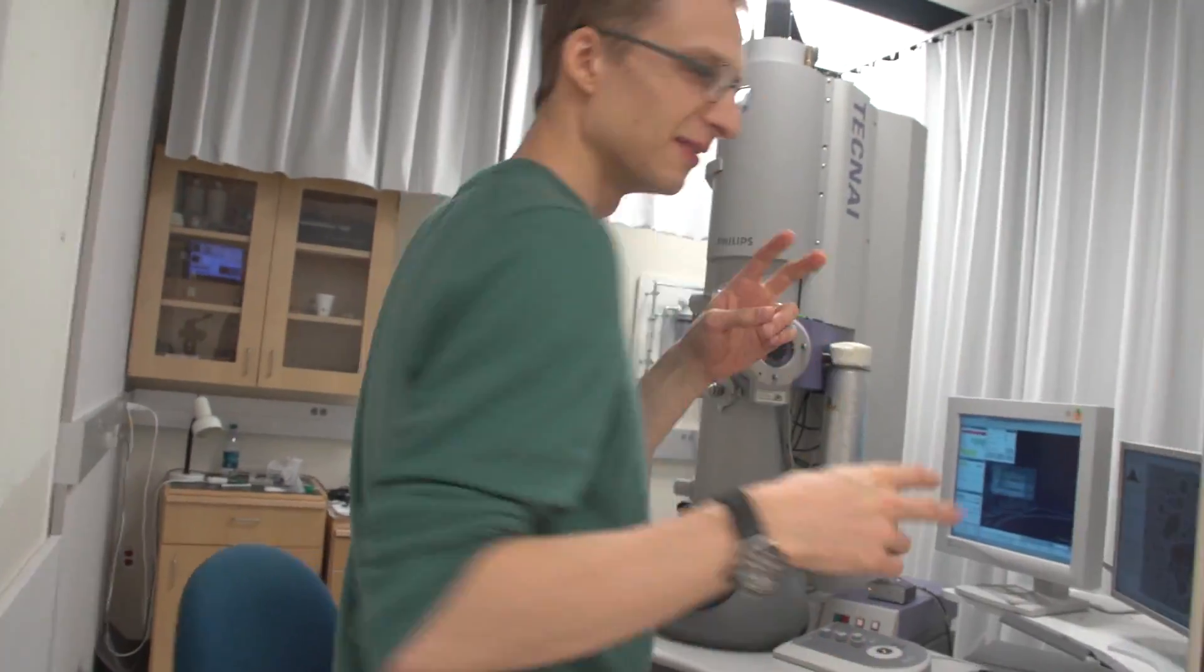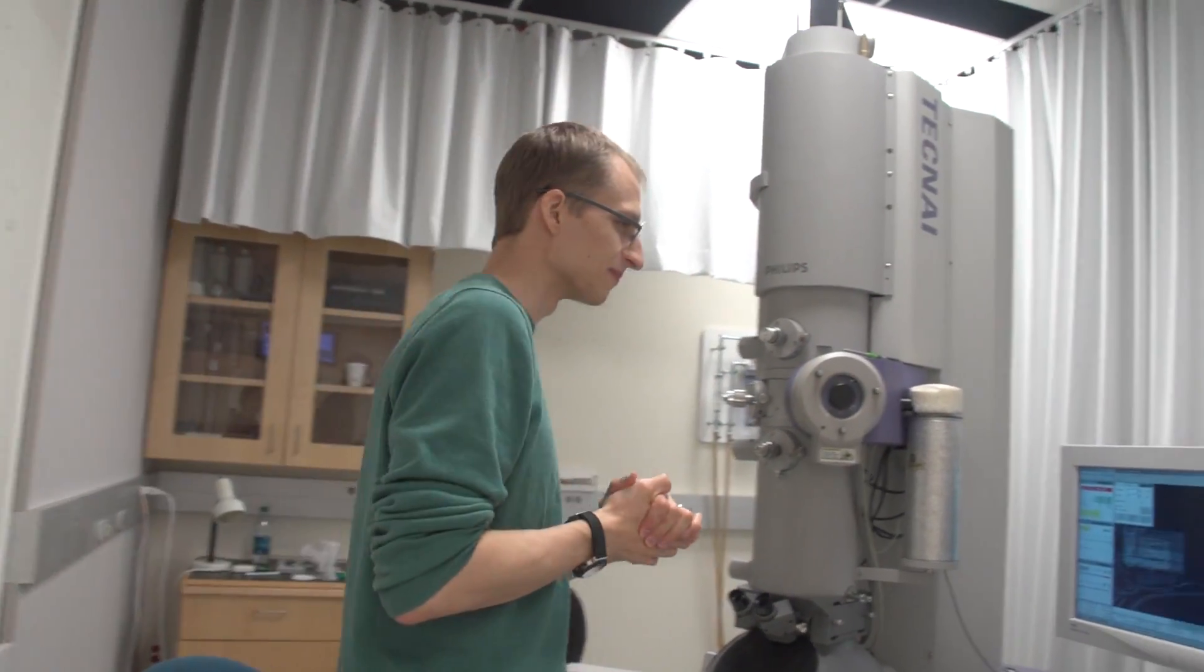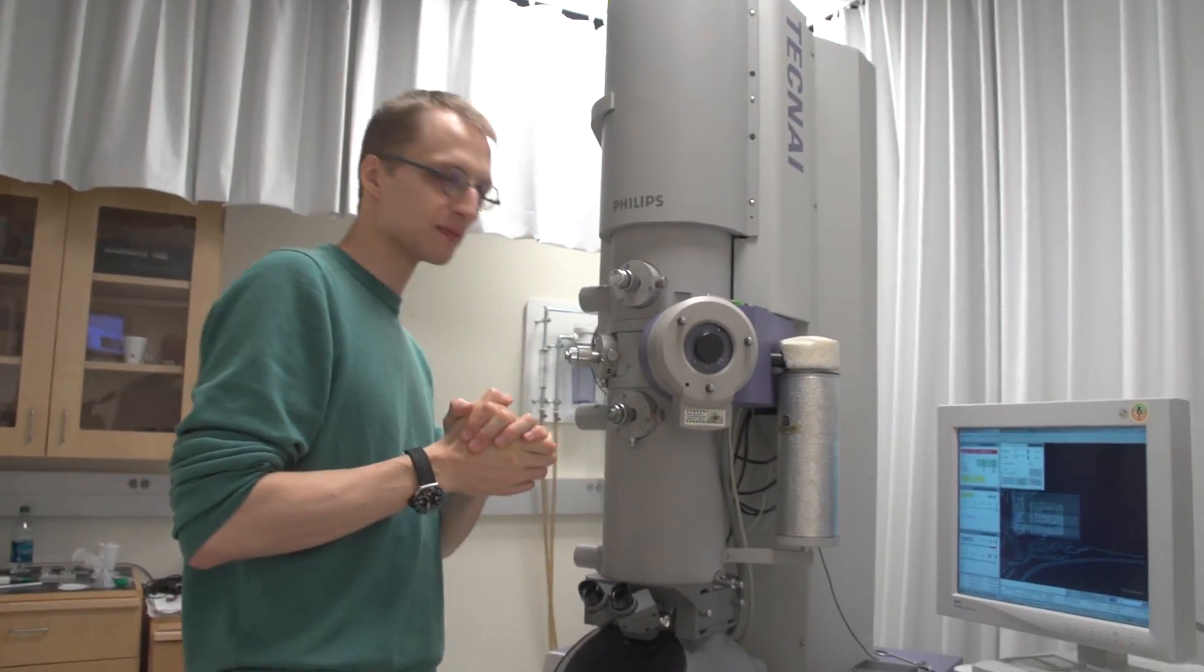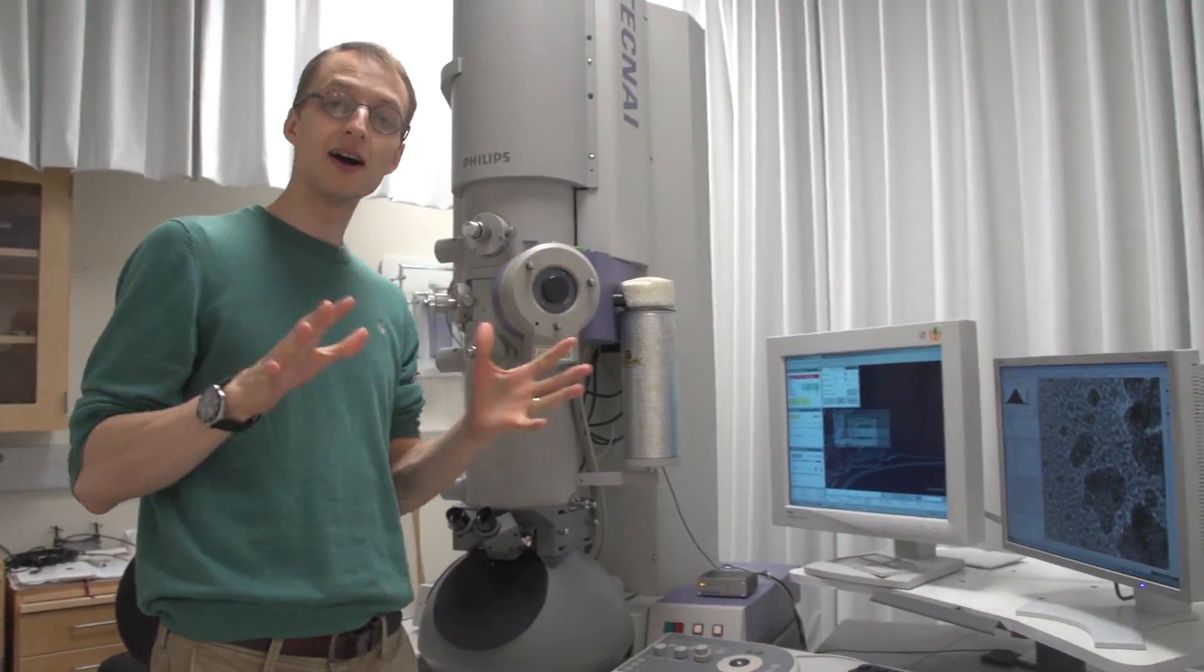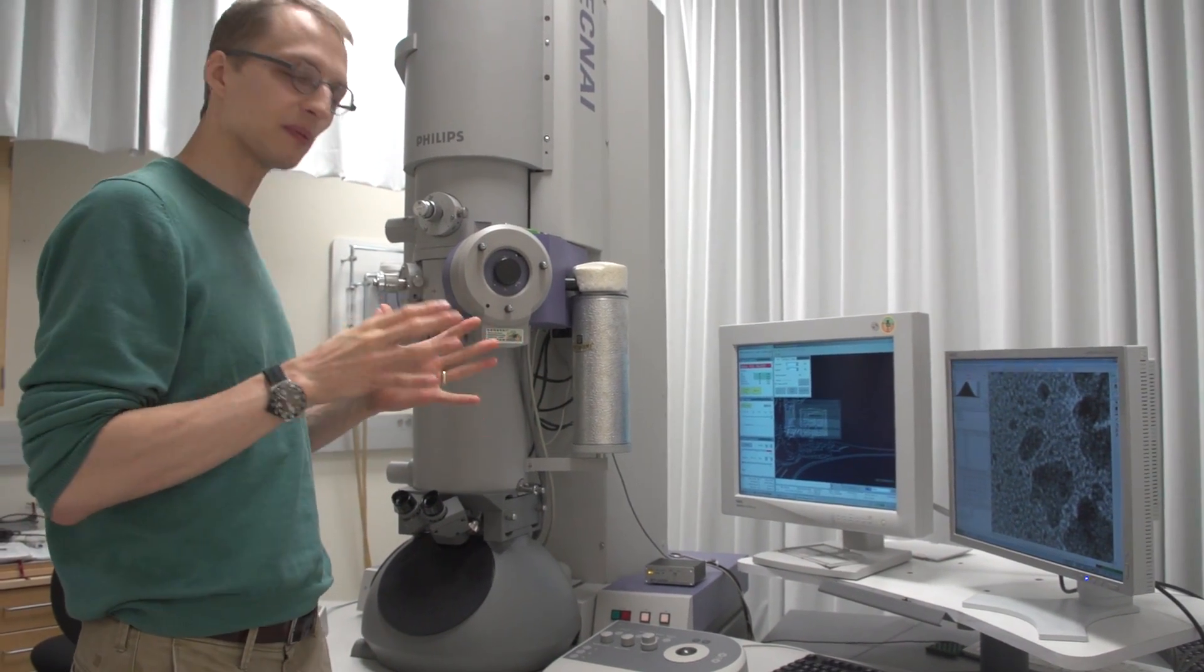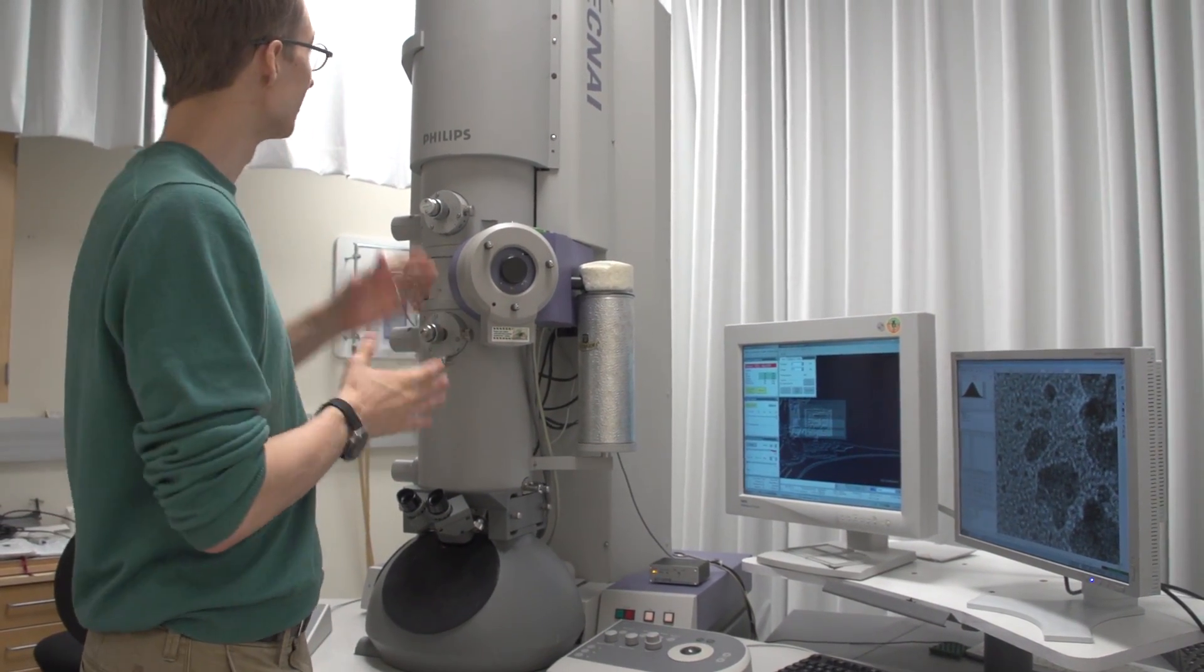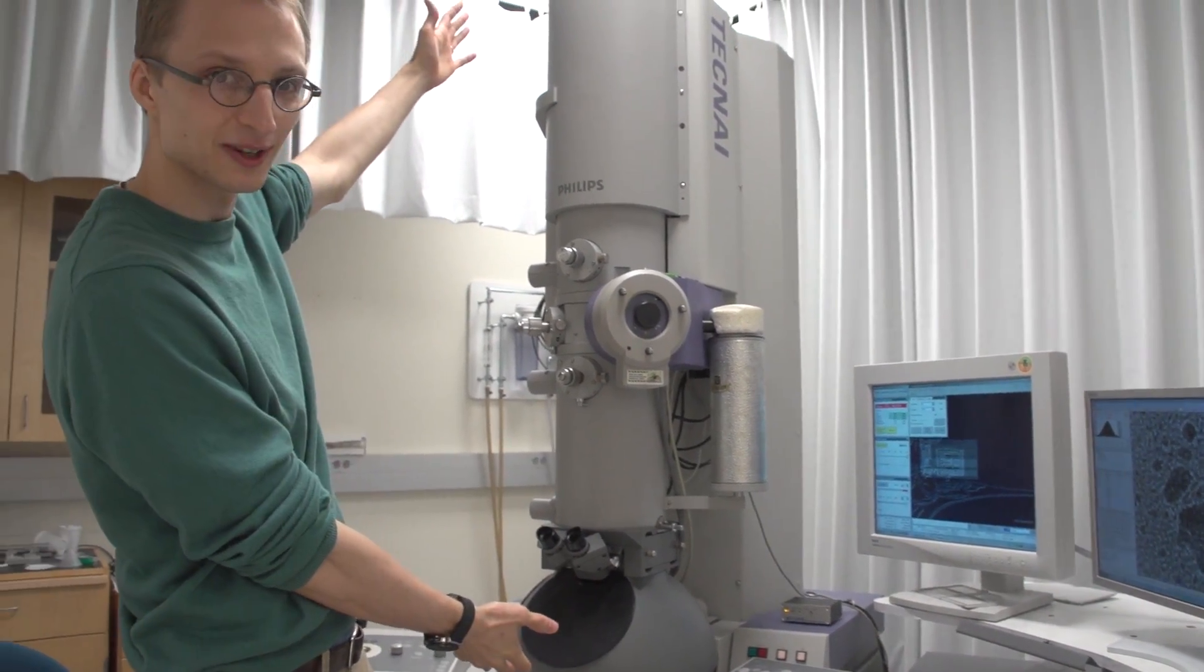This is our microscope lab and we actually have several microscopes around here. This is one of them. We can use this for medium resolution screening, which means we probably won't be able to get atomic resolution structures but we can get pretty good images. This is the electron microscope.